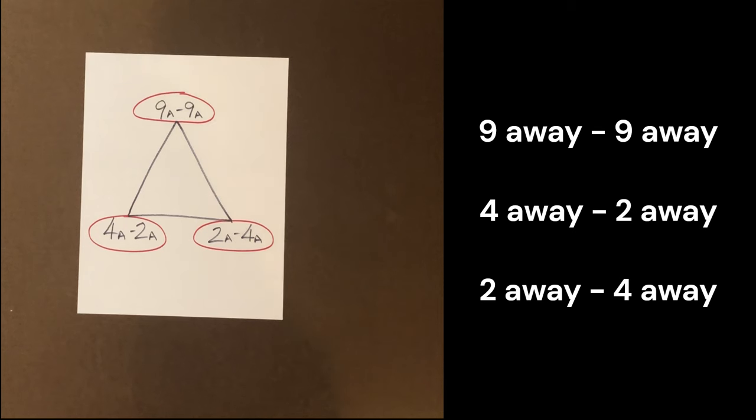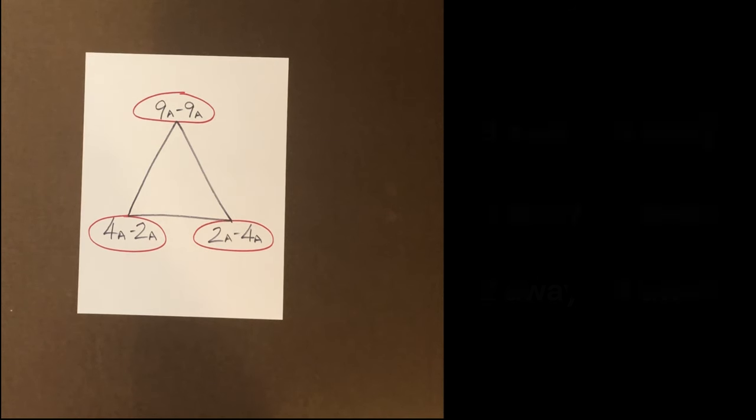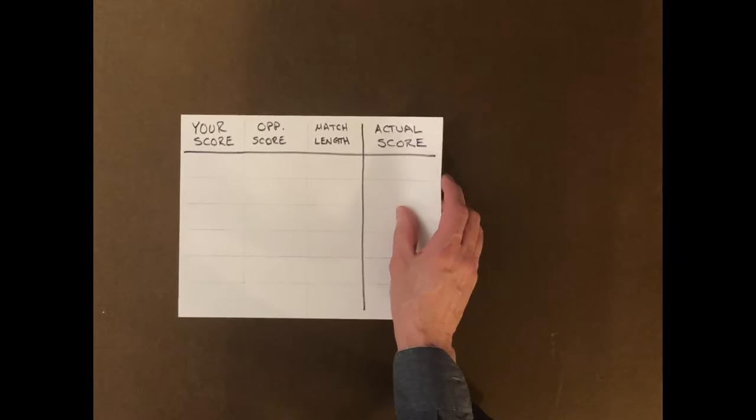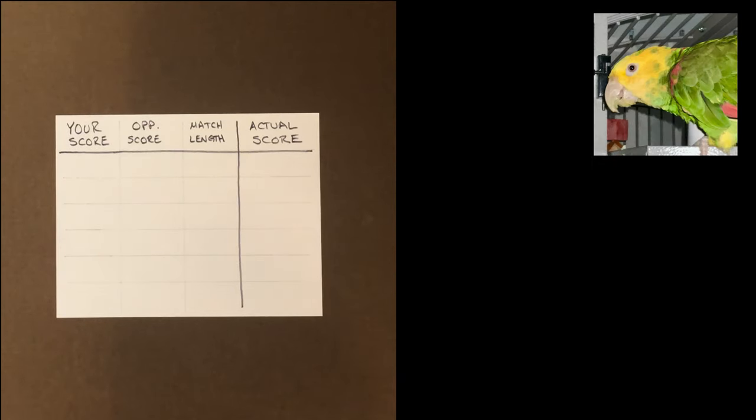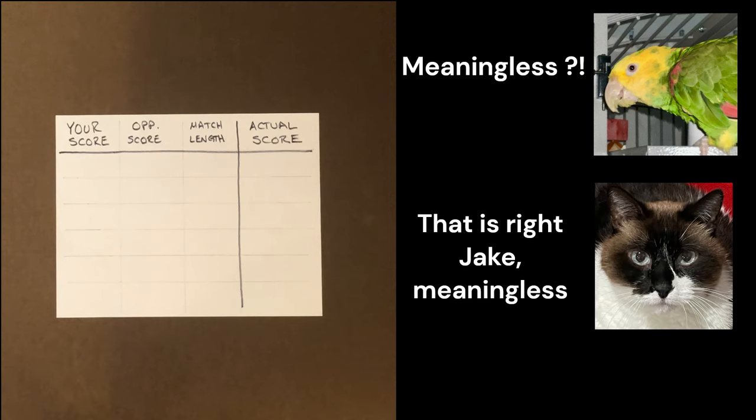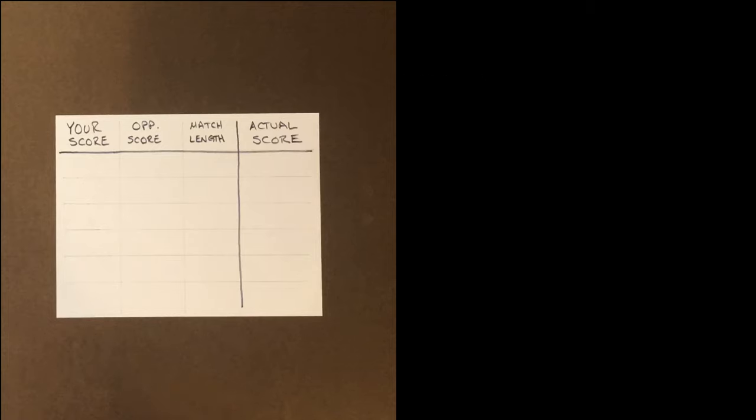For those of you who've never seen match scores presented in this fashion before, here's a quick explanation. Your score in a match is meaningless unless you know how long your match is. Same is true for your opponent's score. So we only think and talk in terms of our away scores. That is, how far away we are from winning, how far away our opponent is from winning the match. It's very easy. We'll do a few examples.